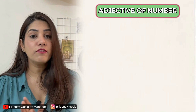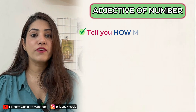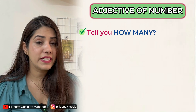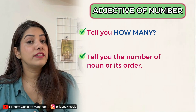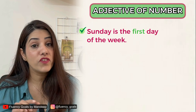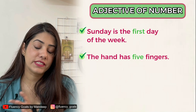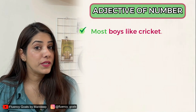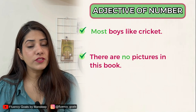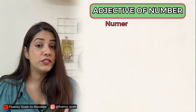Adjectives of quantity are used with uncountable nouns, whereas adjectives of number tell you about the number of countable nouns — asking 'how many?' or 'in what order?'. Examples: 'Sunday is the first day of the week' — 'first' tells you the order. 'The hand has five fingers' — 'five' is the adjective of number. 'Most boys like cricket' — 'boys' is countable so 'most' is the adjective of number. 'There are no pictures in this book' — 'no' is an adjective of number. Adjectives of number are also called numeral adjectives.